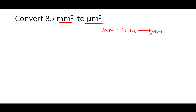So when we square these, we can get those. I'm going to start with my 35 millimeters squared measurement. In order to convert into meters, I'm going to have to use a conversion factor. I know that there are 10 to the 3 millimeters in one meter, so my conversion factor is going to be based on that. Since I want to cancel out millimeters, I'll put millimeters down below and meters up top. I know there are 10 to the 3 millimeters in one meter.